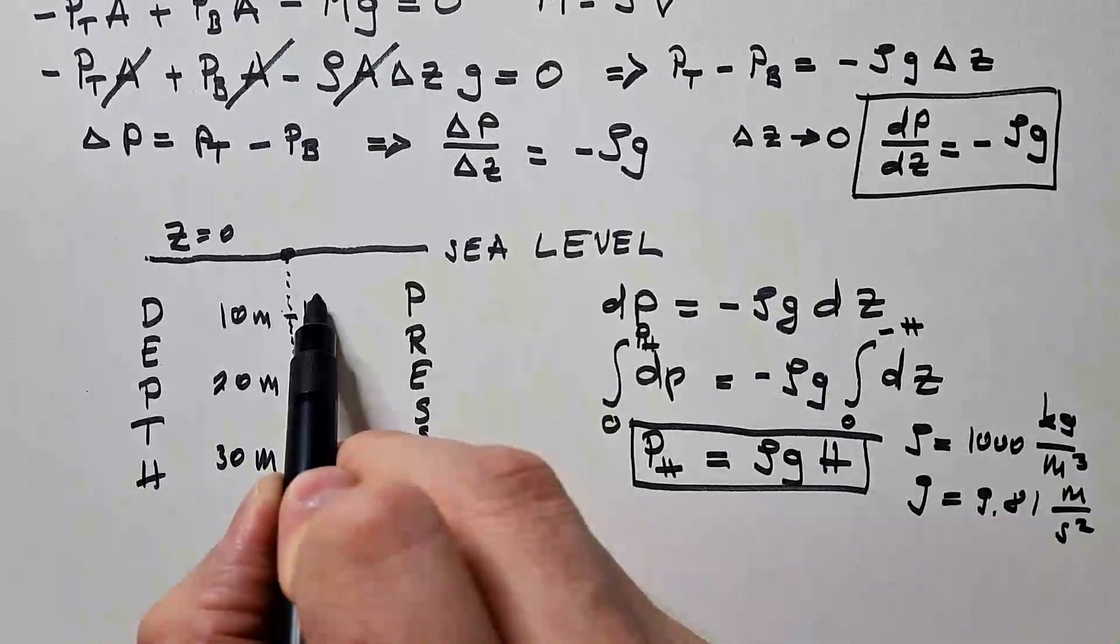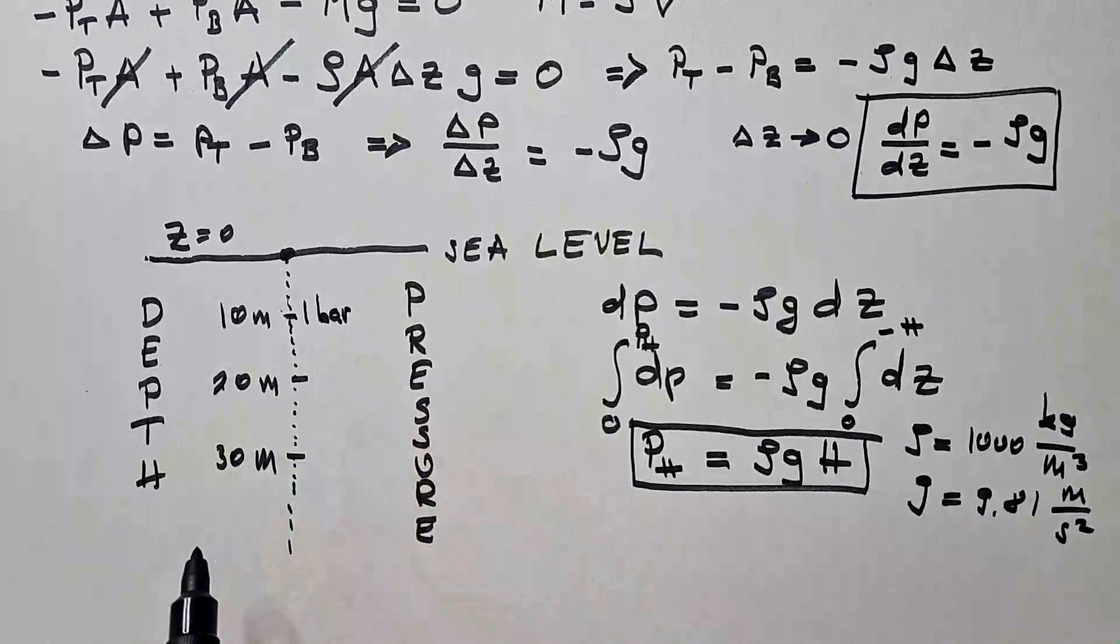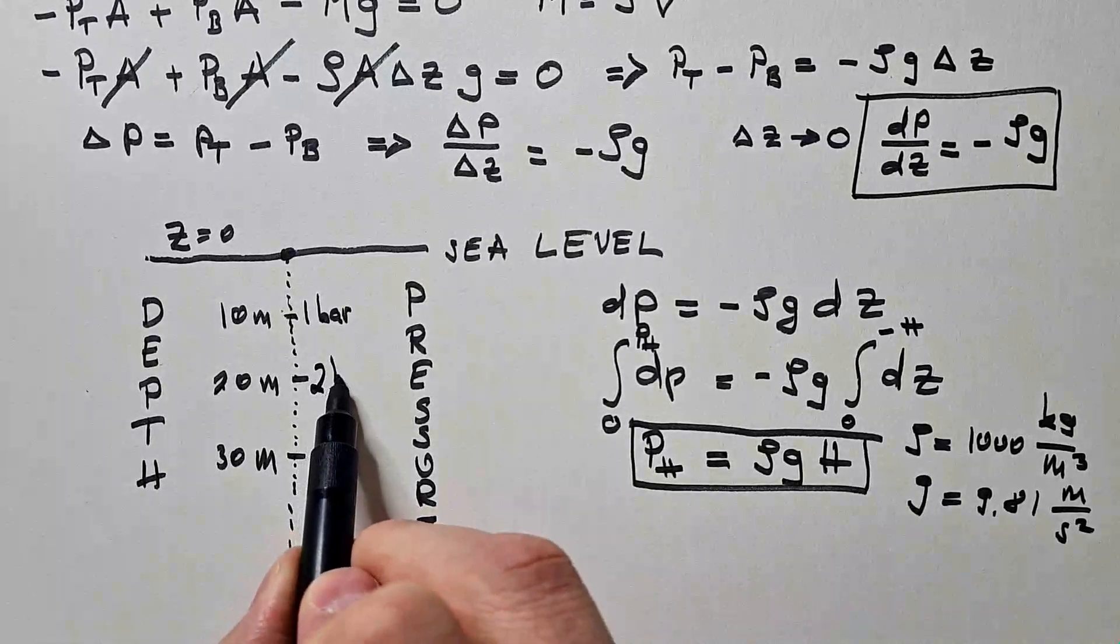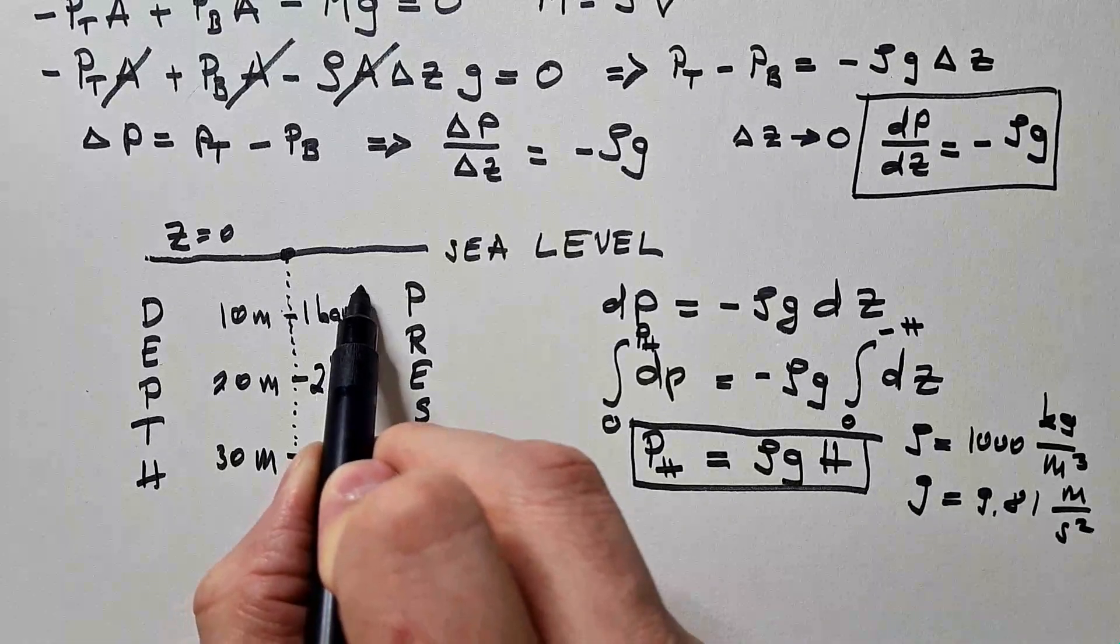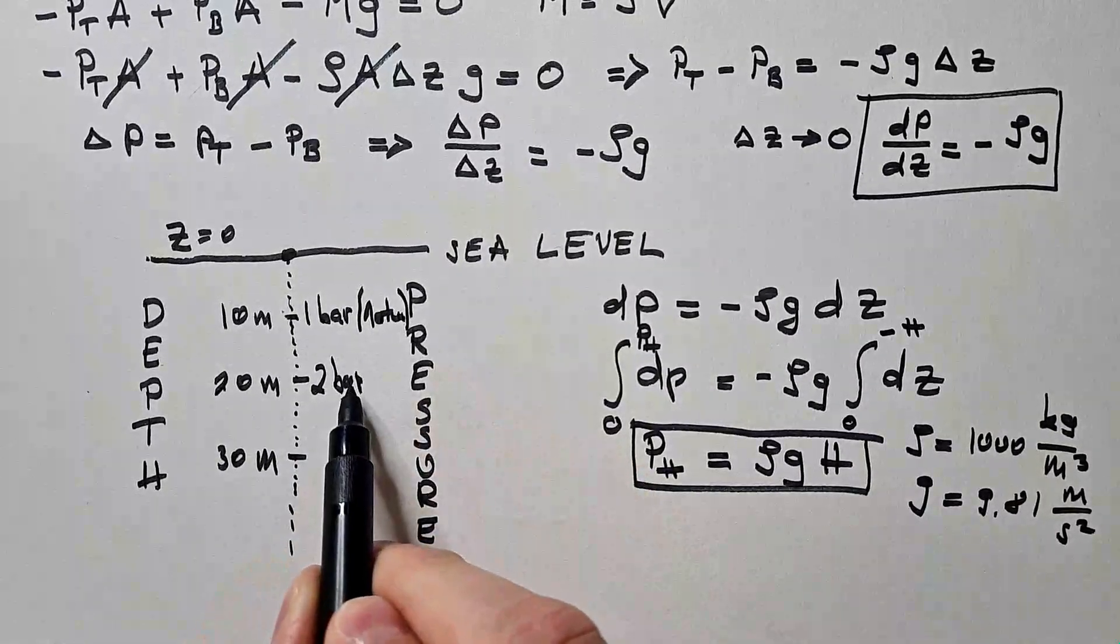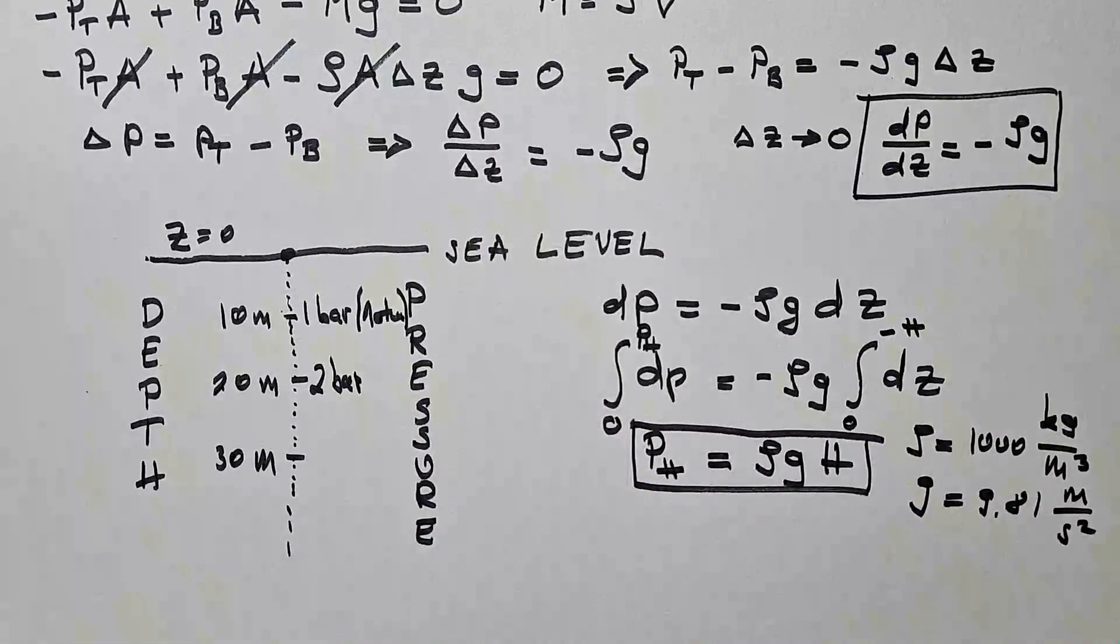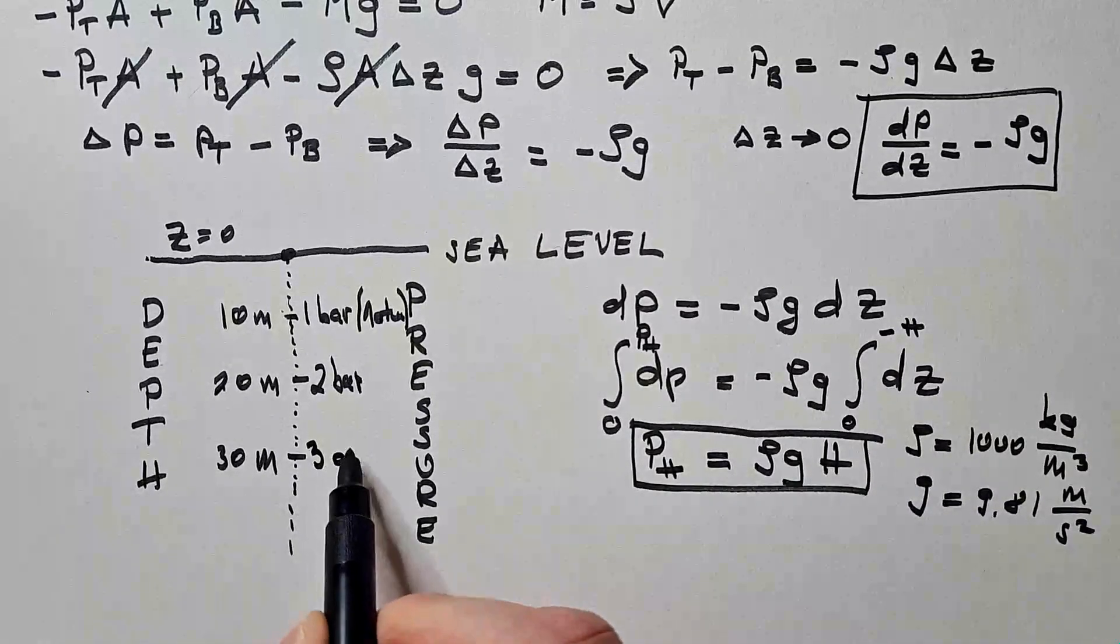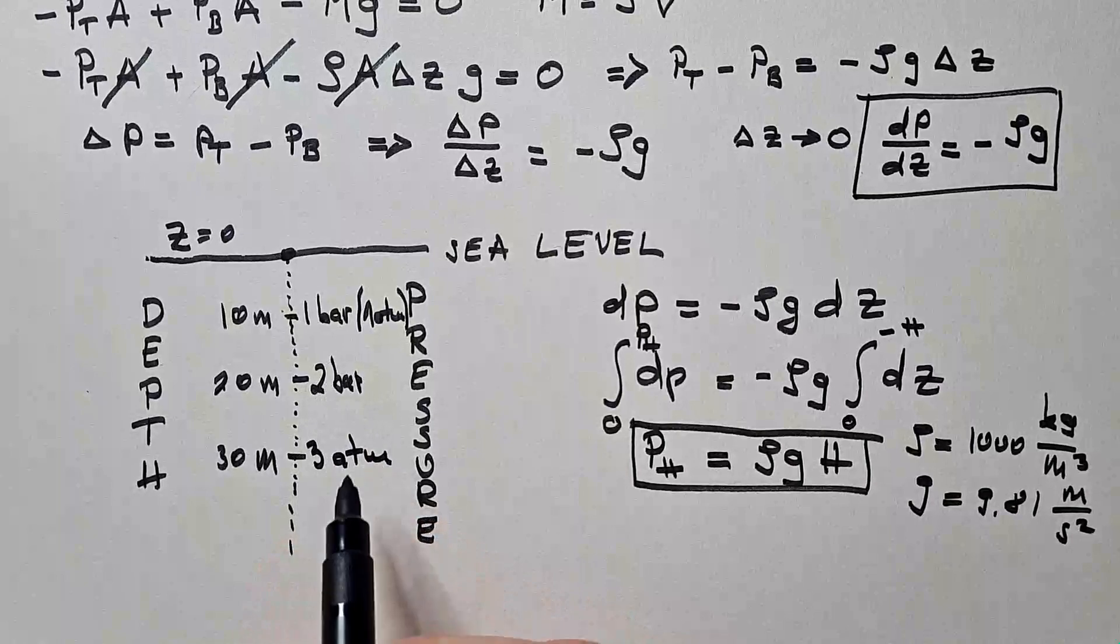When we plug in these values using 10, 20, and 30 meters for h, we get that at 10 meters, pressure is about 1 bar. At 20 meters, pressure is about 2 bars. And 1 bar is approximately 1 atmosphere. 2 bars is approximately 2 atmospheres. 30 meters, 3 atmospheres, which is 3 bars.